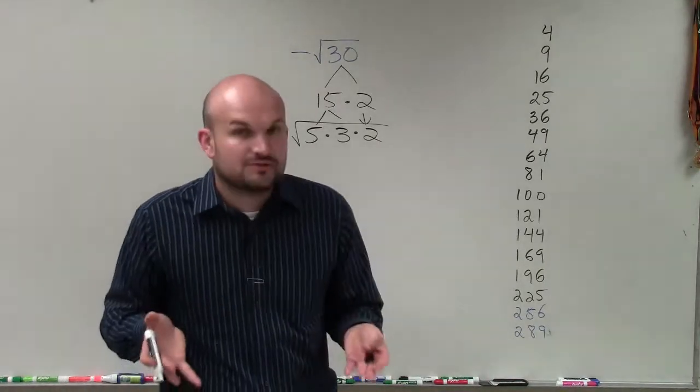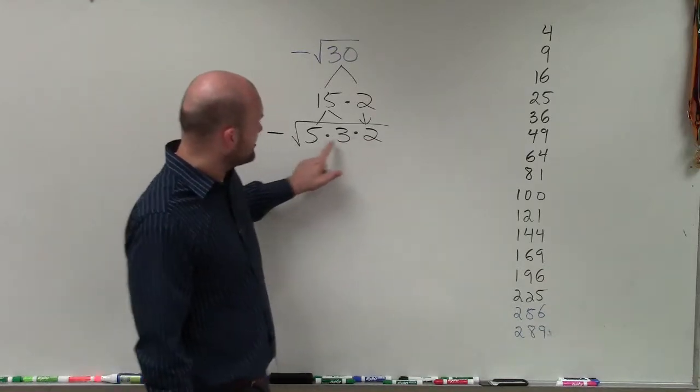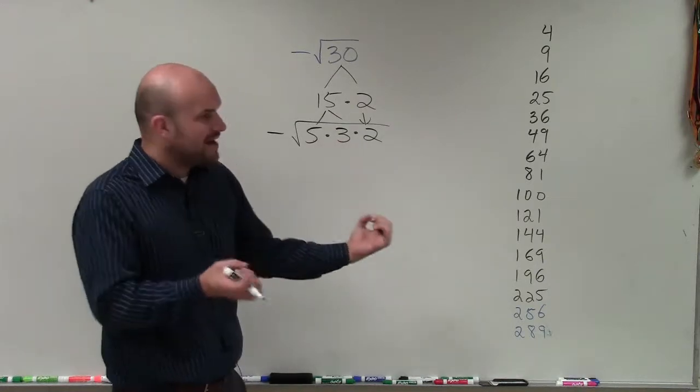However, remember, we're trying to trick the square root. The square root says the square root of what number multiplied by itself? Well, we don't have any numbers multiplied by itself. Therefore, we can't take the square root of any pairs of numbers here.